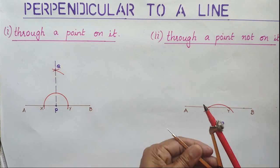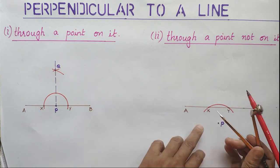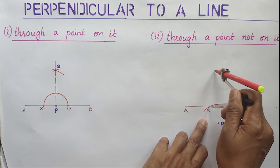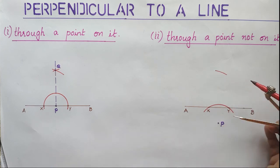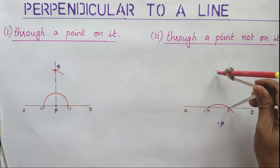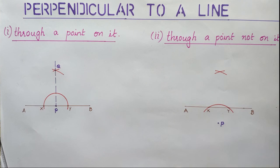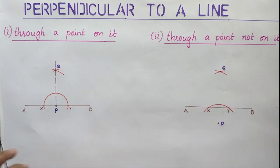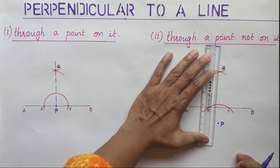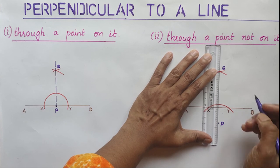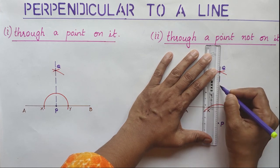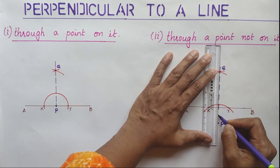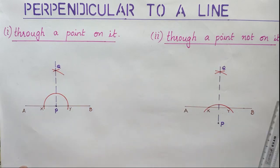In the second case also, place the metal tip on X, draw an arc, then without changing the compass, place the metal tip on Y, draw another arc. Both arcs cross at Q. Join P and Q — we will get the perpendicular PQ.